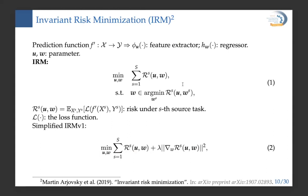Now let's talk about the invariant risk minimization paradigm, which allows for automatic feature extraction of invariant features among different but related tasks. The prediction function f' consists of a feature extractor phi and a regressor h, where u and w are the parameters. The idea is to learn a feature representation phi that facilitates the development of a regressor h optimal for all training tasks concurrently, as expressed in equation one. This is a very difficult bi-level optimization equation, which can be relaxed to the practical IRM v1 representation.